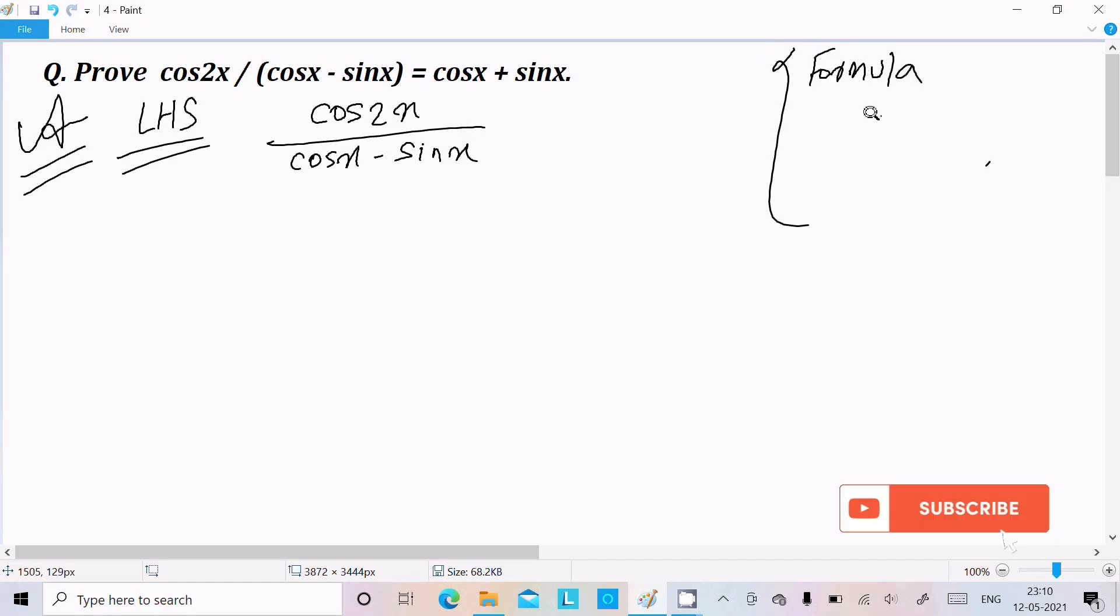The formula for cos2x is cos squared x minus sin squared x. So here for cos2x we can write cos squared x minus sin squared x.